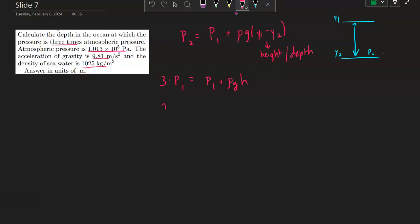I'll subtract P1 from both sides. This gives me 2 times the normal atmospheric pressure equals rho g h. So h equals 2 times the normal atmospheric pressure divided by the quantity rho times g, and this will be your height in units of meters. Study well.